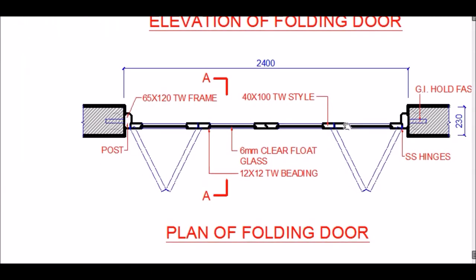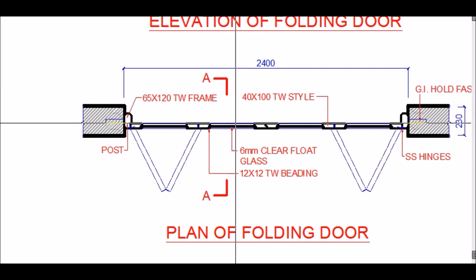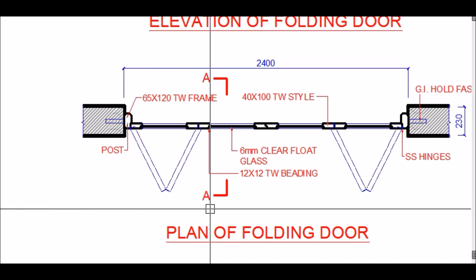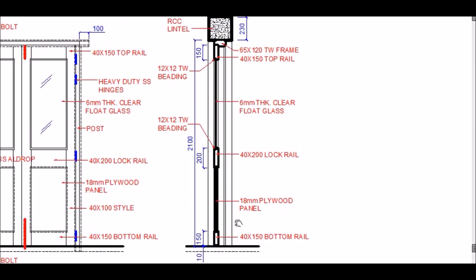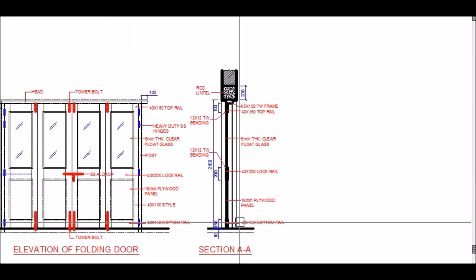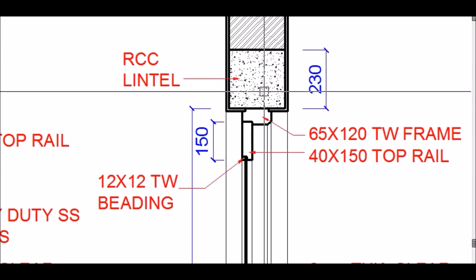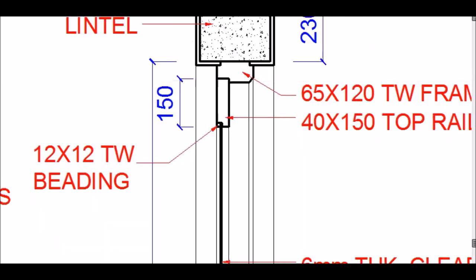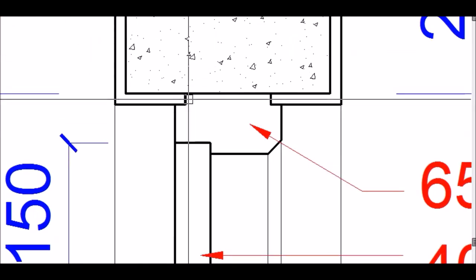Next we look at section AA, which is cut through the door and viewed in the specified direction. At the top you can see the brickwork, then the RCC lintel, and just below the lintel is the door frame — again a 65 by 120mm teakwood frame — with similar cuts including the two plaster notches and the rebate.